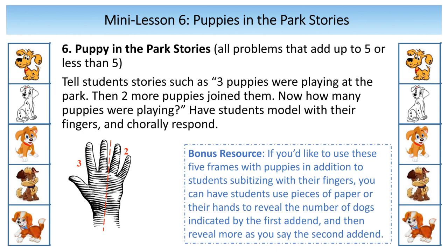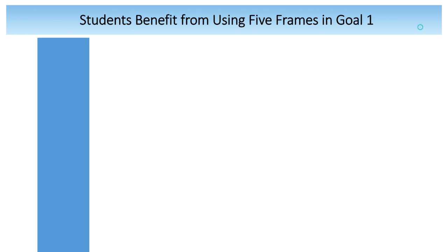You may decide that you want students to also have the opportunity to do this kind of thinking with a 5-frame. There's a bonus resource you can download that will allow you to print out the 5-frames you see on the screen. Students can cover up the whole frame with their hand or a piece of paper, and then reveal the first addend you tell them, and then the second addend.